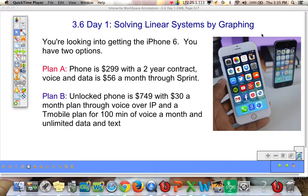So here's a situation that we're going to look at. Let's say you were thinking about getting the new iPhone 6 and you had two options. Plan A, the phone is only $299 with a two-year contract, and within that contract the voice and data is $56 a month through Sprint.